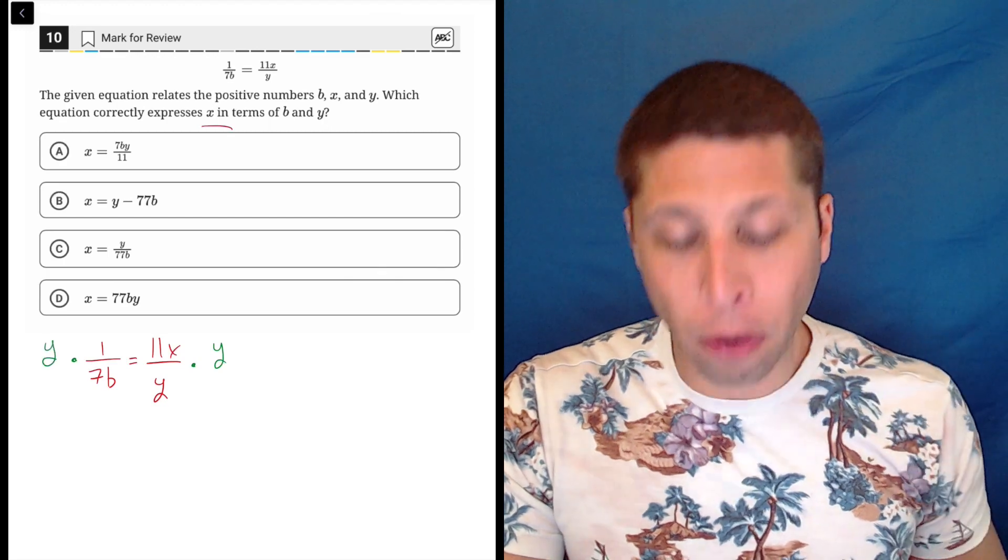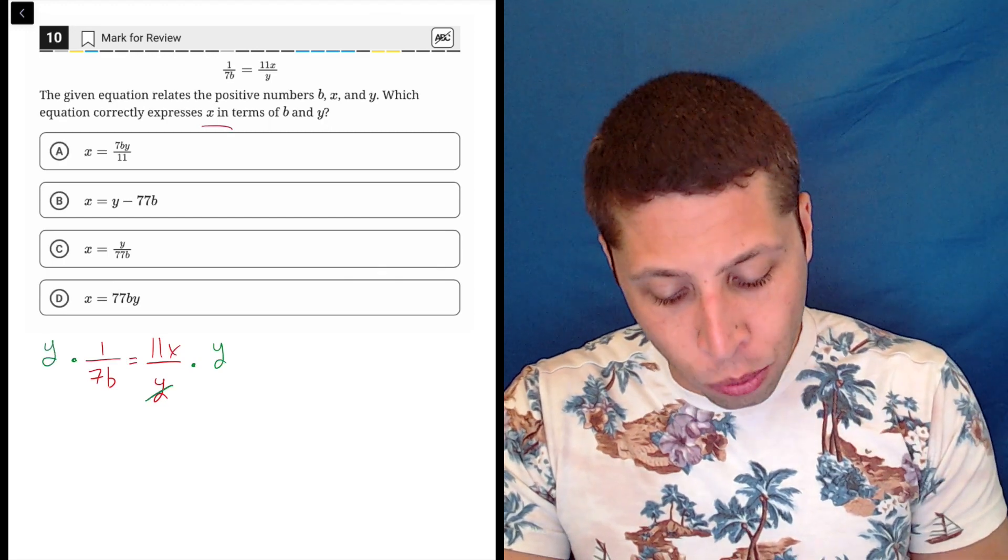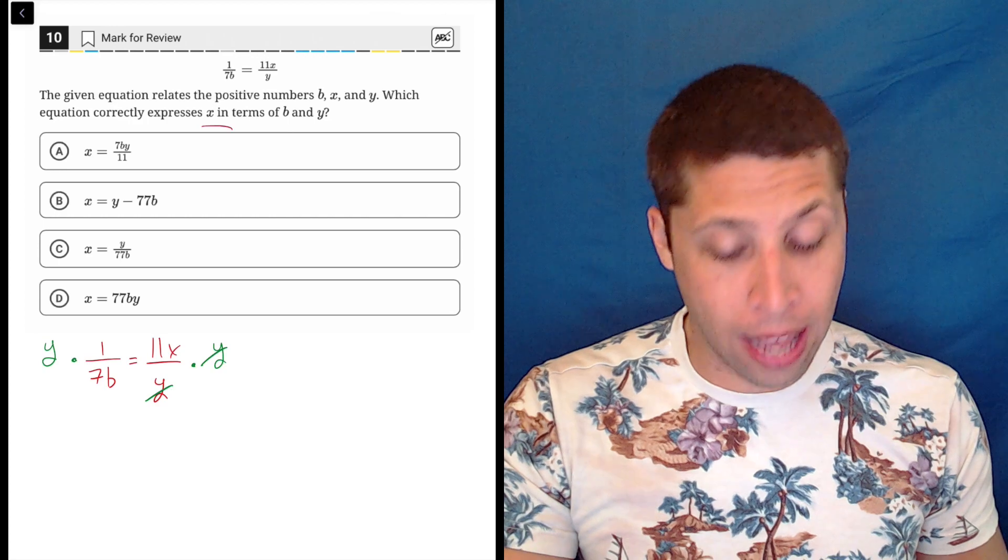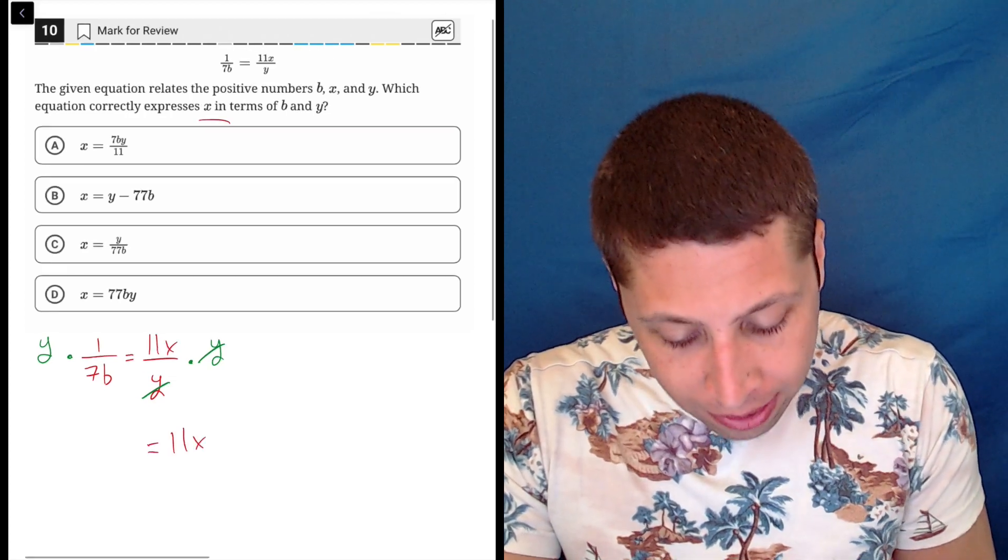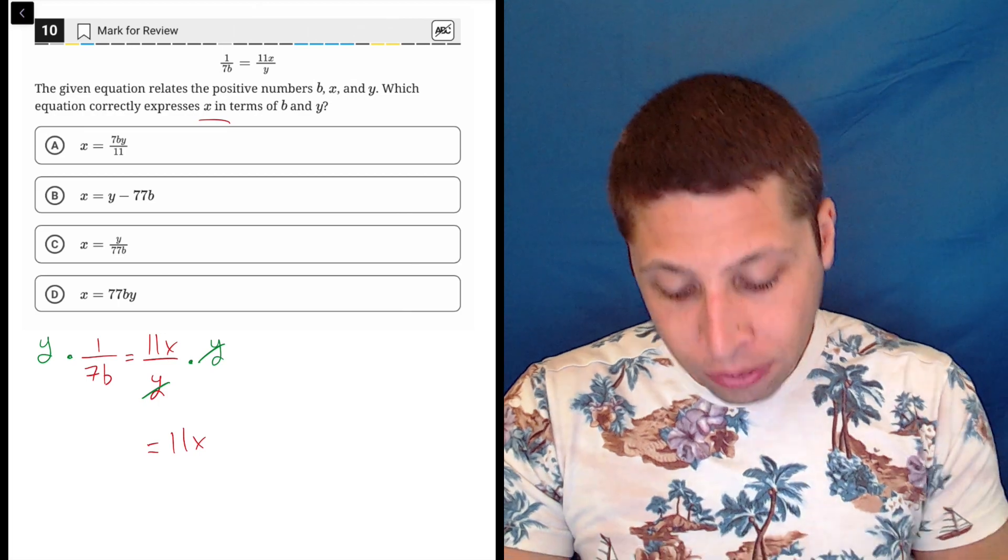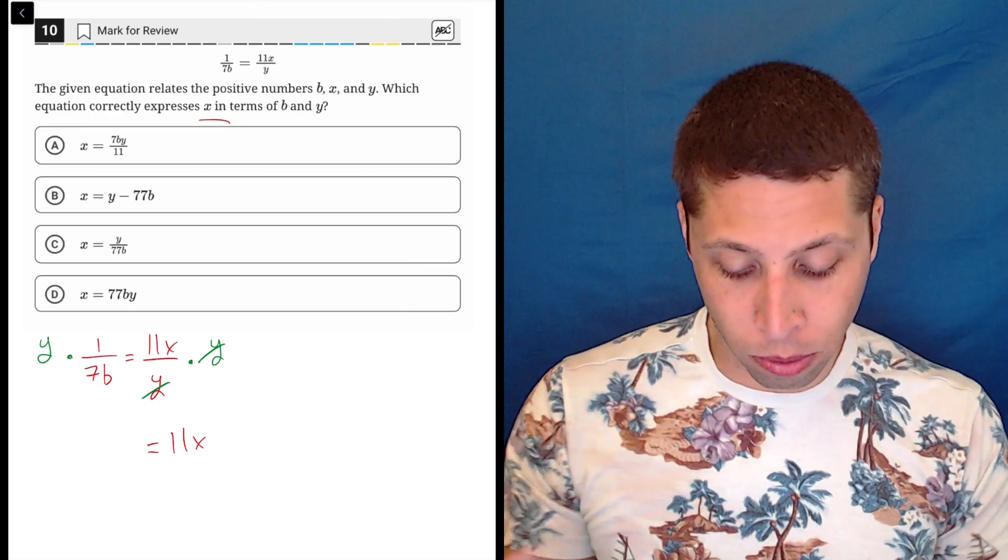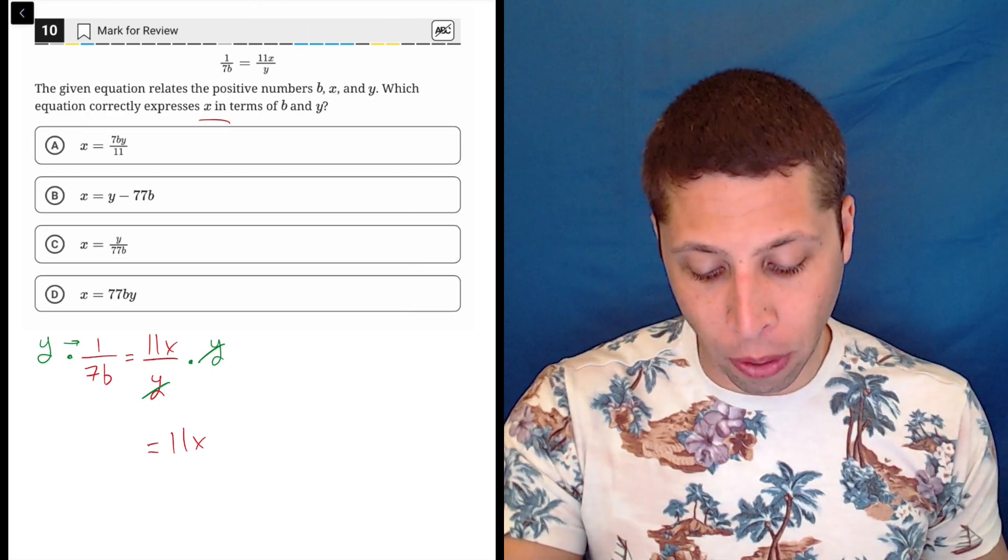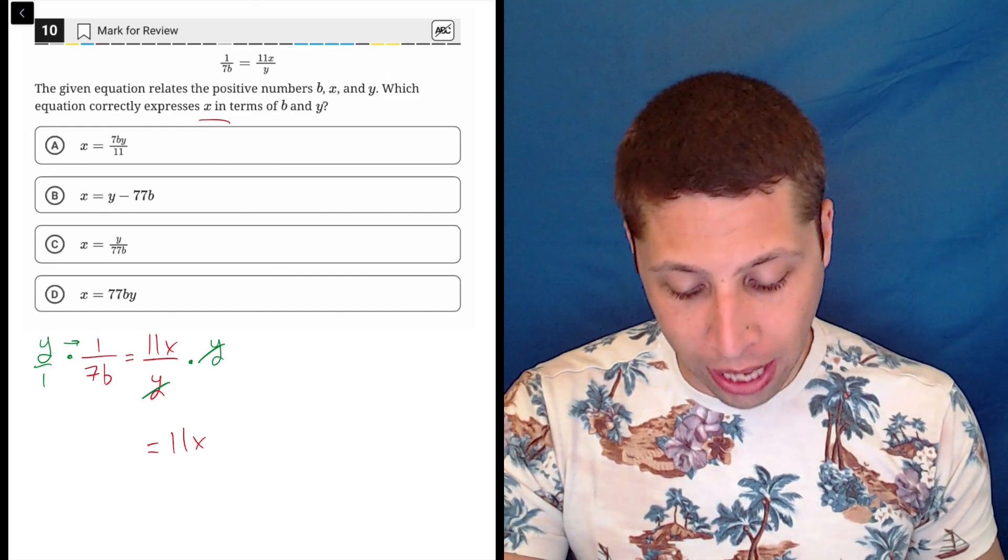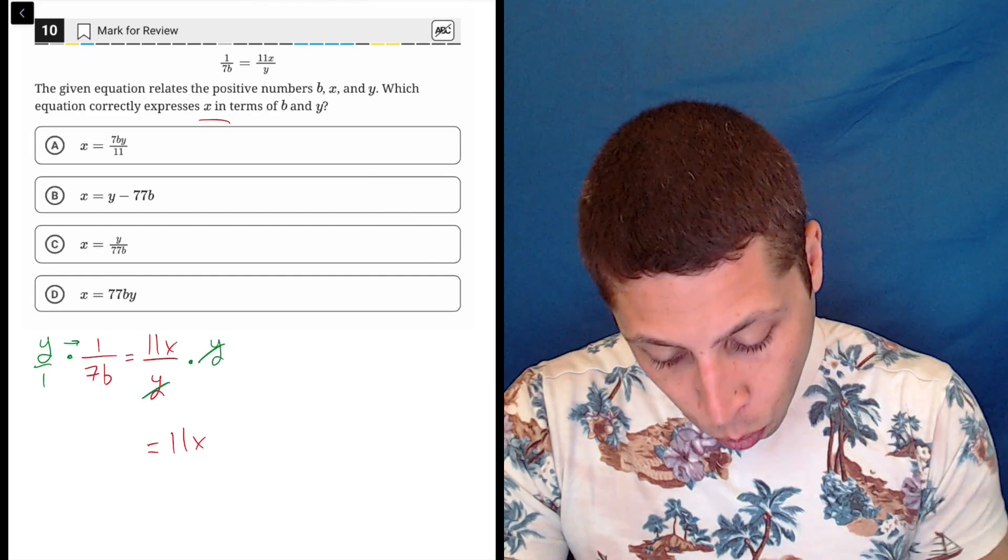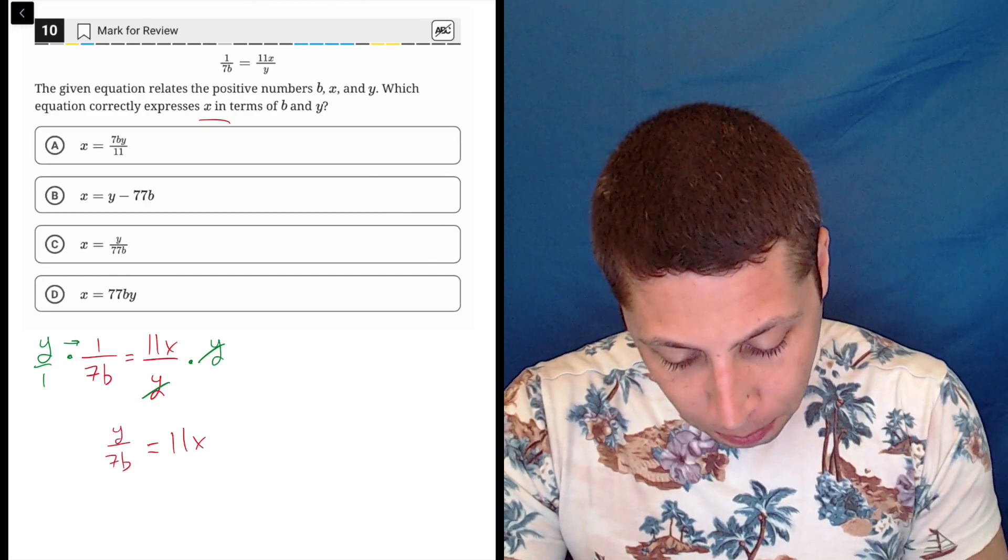So you can do this in one step. I'm gonna do it in two. But basically if we multiply both sides by Y, the right side's Y is gonna cancel out. And that will just leave us with an 11X on this side. And then on the left side, it's just multiplying fractions. So this isn't so bad. The Y just multiplies by the one. If we wanted to put it over one for the symmetry of fraction multiplication, we can. But that leaves us then with Y over seven B.